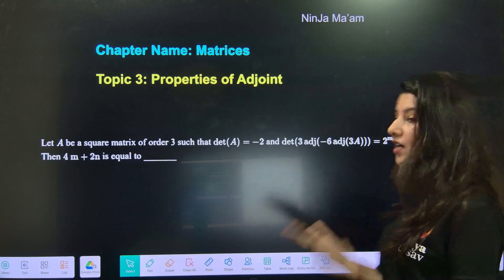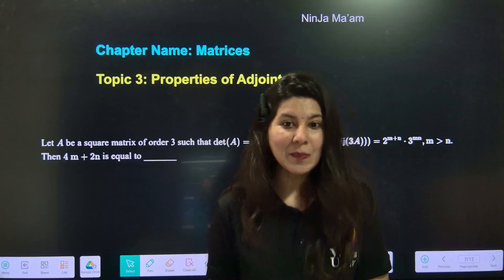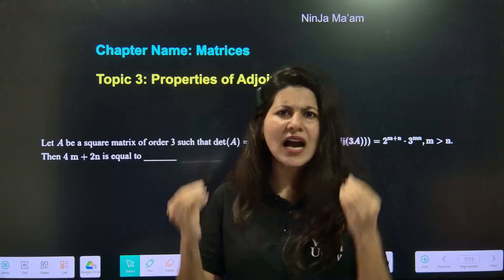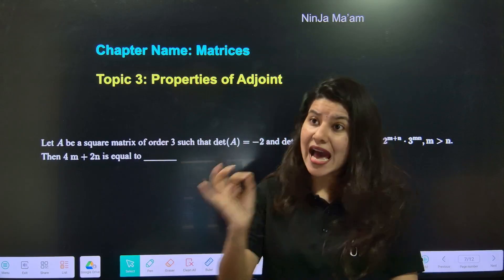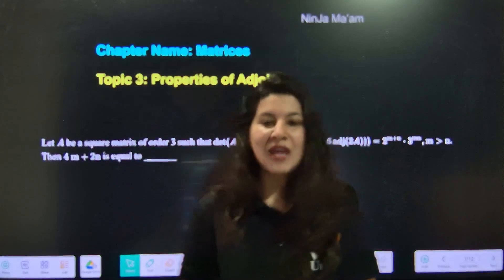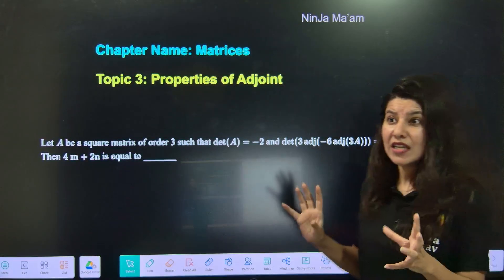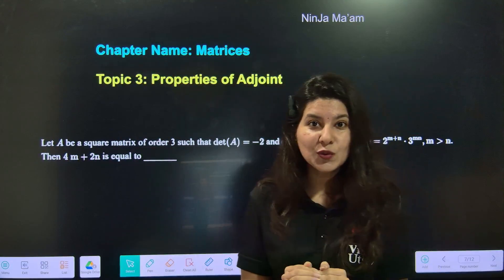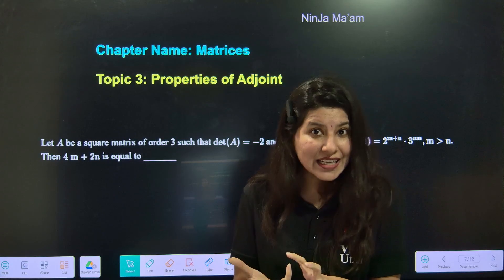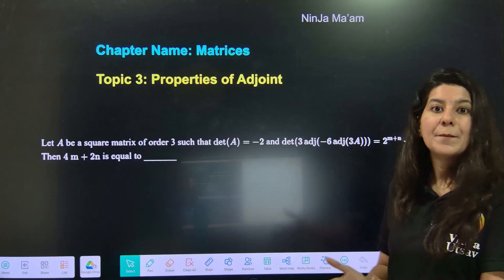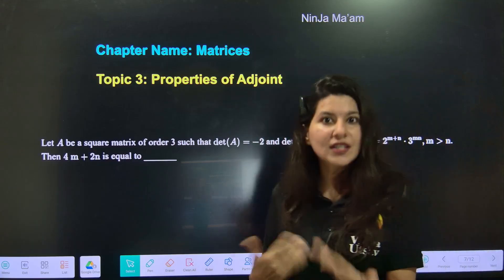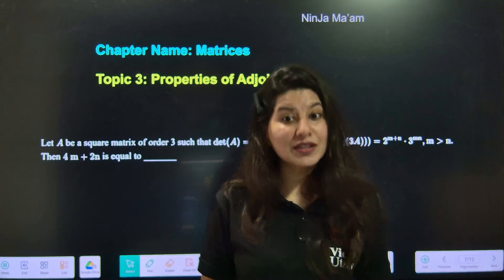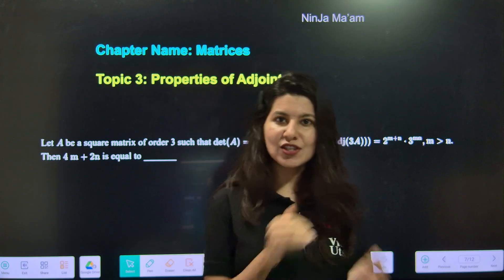Topic number 3 is properties of adjoint. You can see the category of questions NTA favors every year. I am very sure we are going to see this in both the January and April attempts. I do not have a very direct shortcut for it, but I have given you a Ninja style approach so that this otherwise lengthy problem can be reduced and done in two steps. Ninja technique is provided for this topic too — links will be shared.